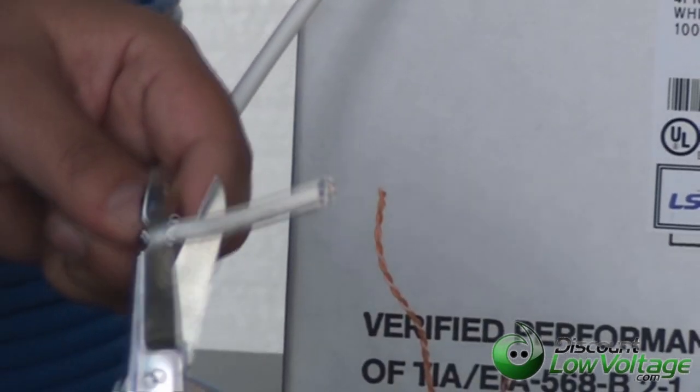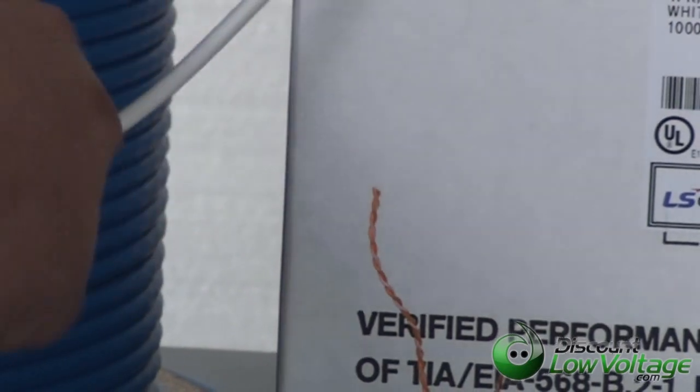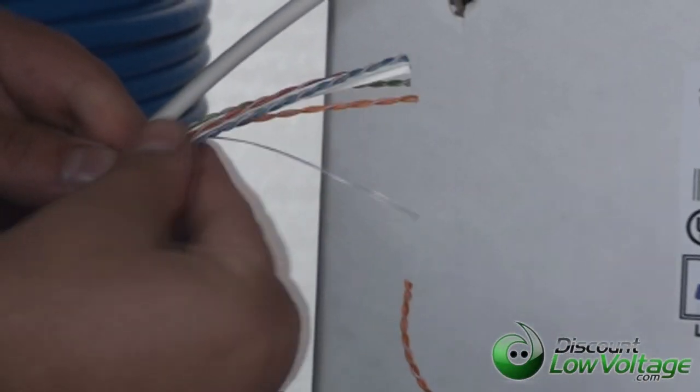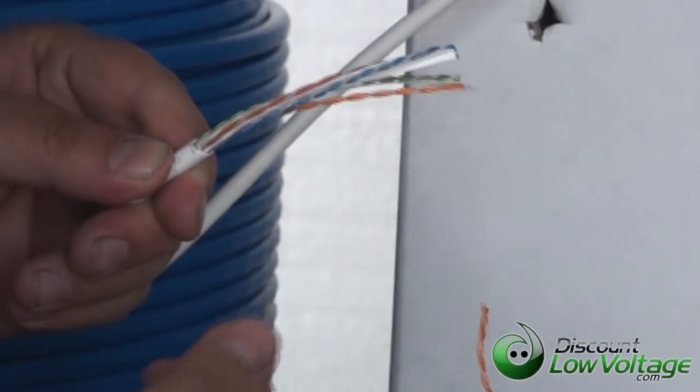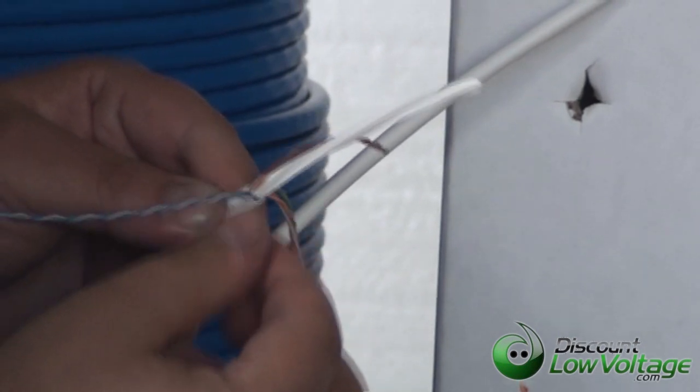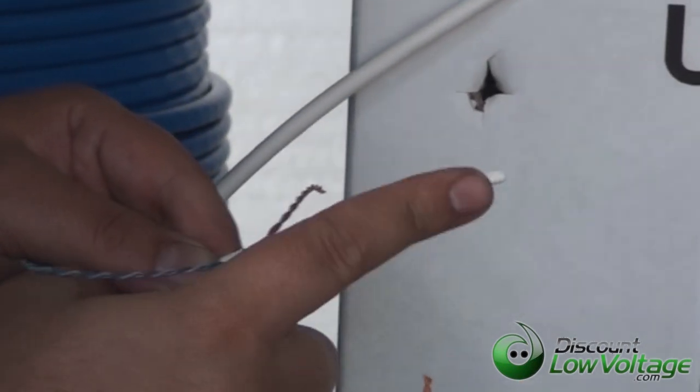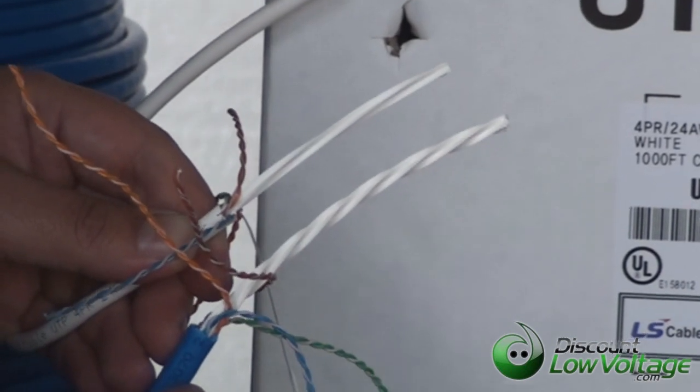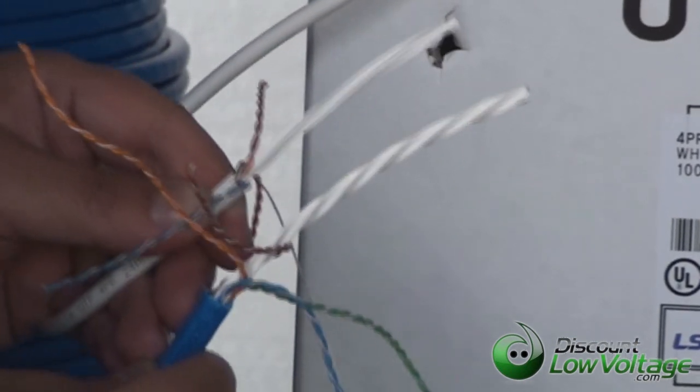Now Cat 6 supports speed of 10 gig up to 55 meters. So obviously the pairs aren't twisted around the center spline. They are twisted tighter than Category 5 and the center spline does have a little bit of a twist to it, but not as much as the Cat 6A.